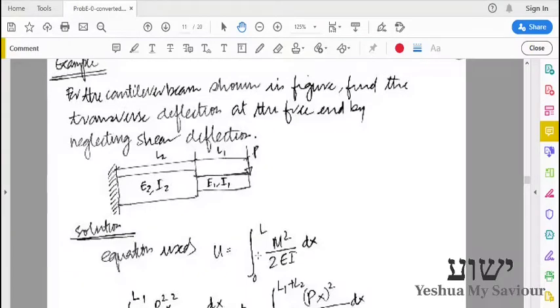For the cantilever beam shown, we have to find the transverse deflection at the free end by neglecting the shear deflection. We are given a cantilever beam which has two different sections made of two different materials. The properties are different in the two sections and the lengths are also different.